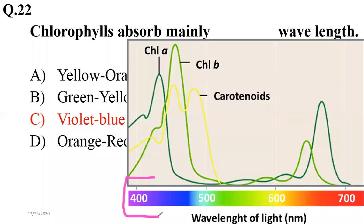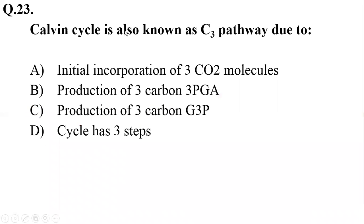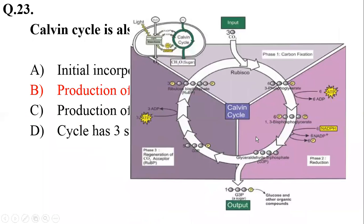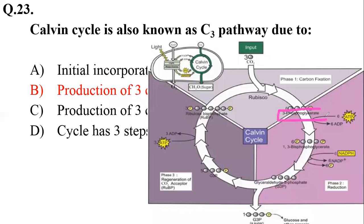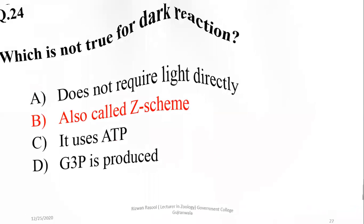Indigo is not absorbed. As you can see, if violet or blue is given we will prefer that; otherwise red is relatively absorbed by chlorophyll. That's why we chose red. Question 23: The Calvin cycle is also known as the C3 pathway due to the production of the first stable product, which is a 3-carbon compound known as 3-phosphoglycerate (3-PGA), formed at the end of the fixation phase, so option B. Question 24: Which is not true for dark reactions? Dark reactions are not known as the Z-scheme; the Z-scheme is the name of the light reactions process.